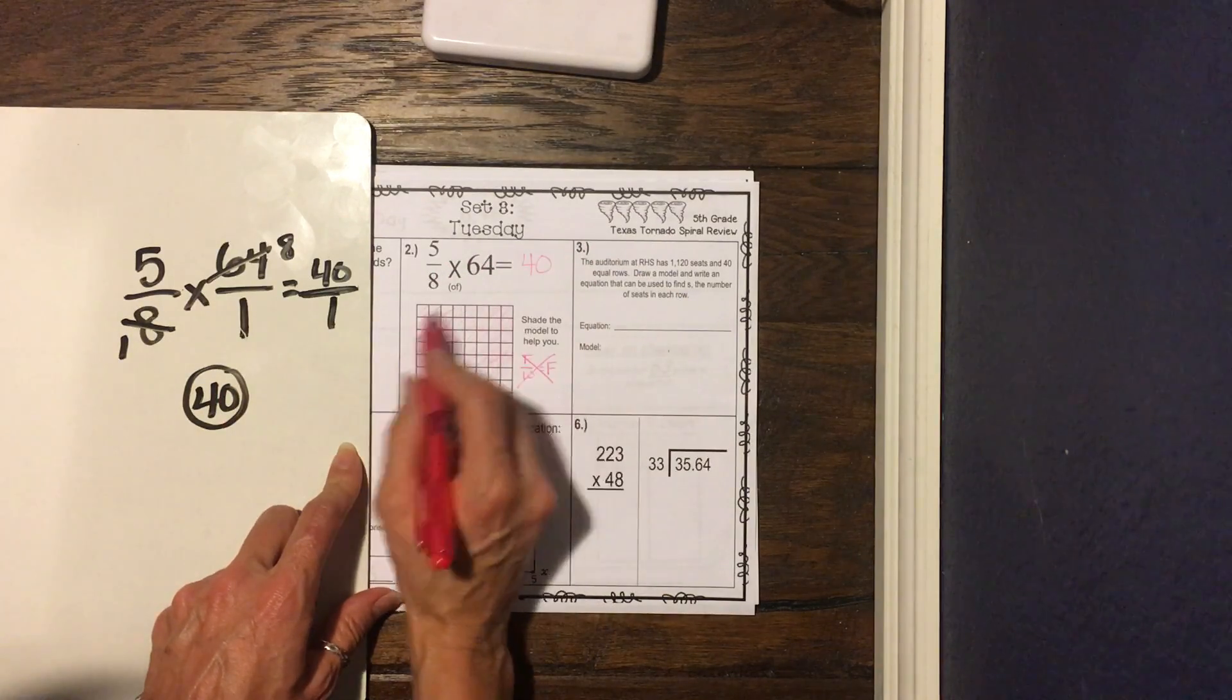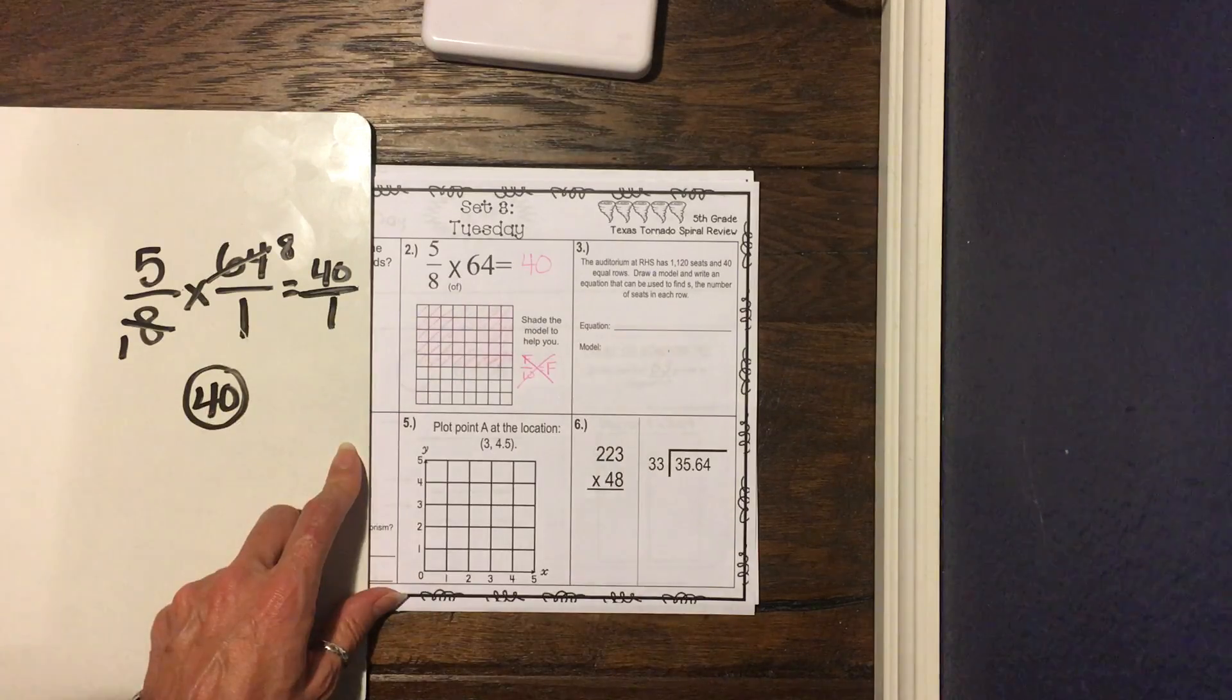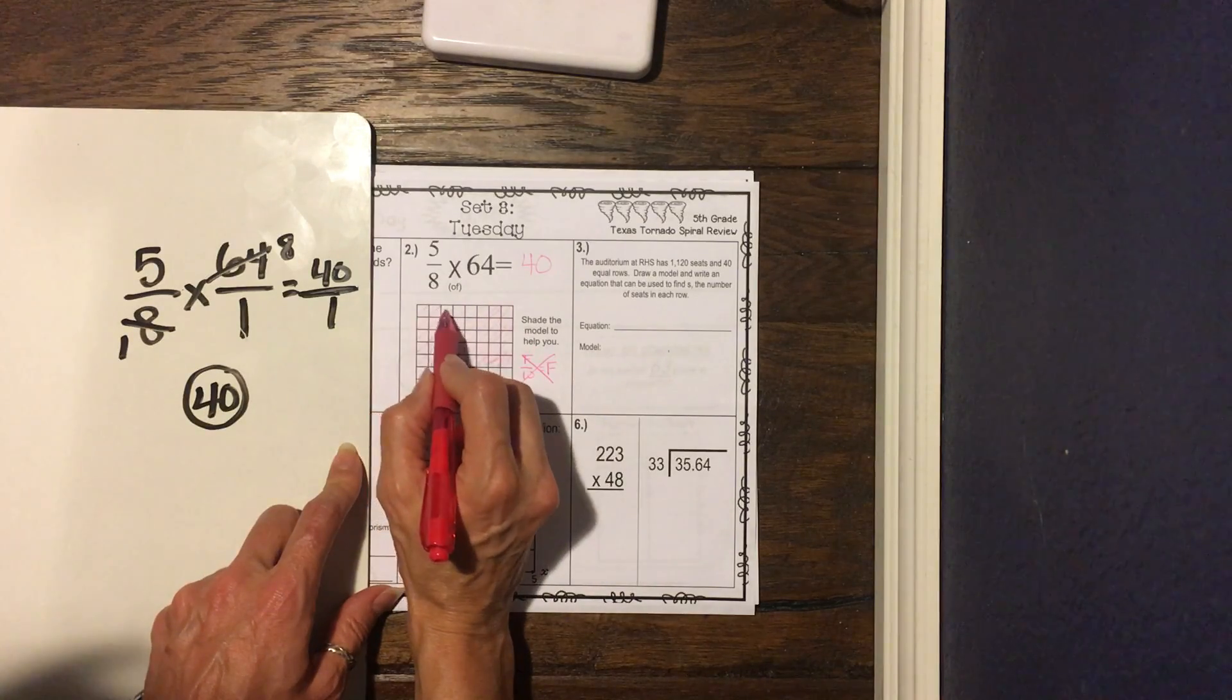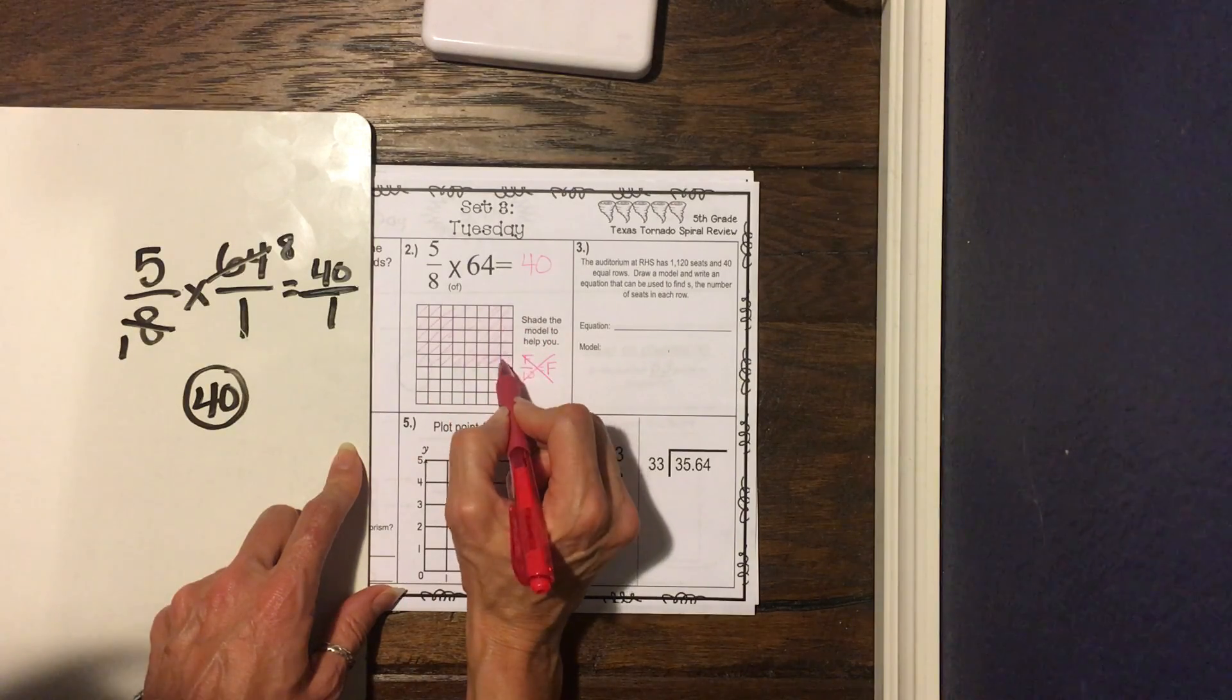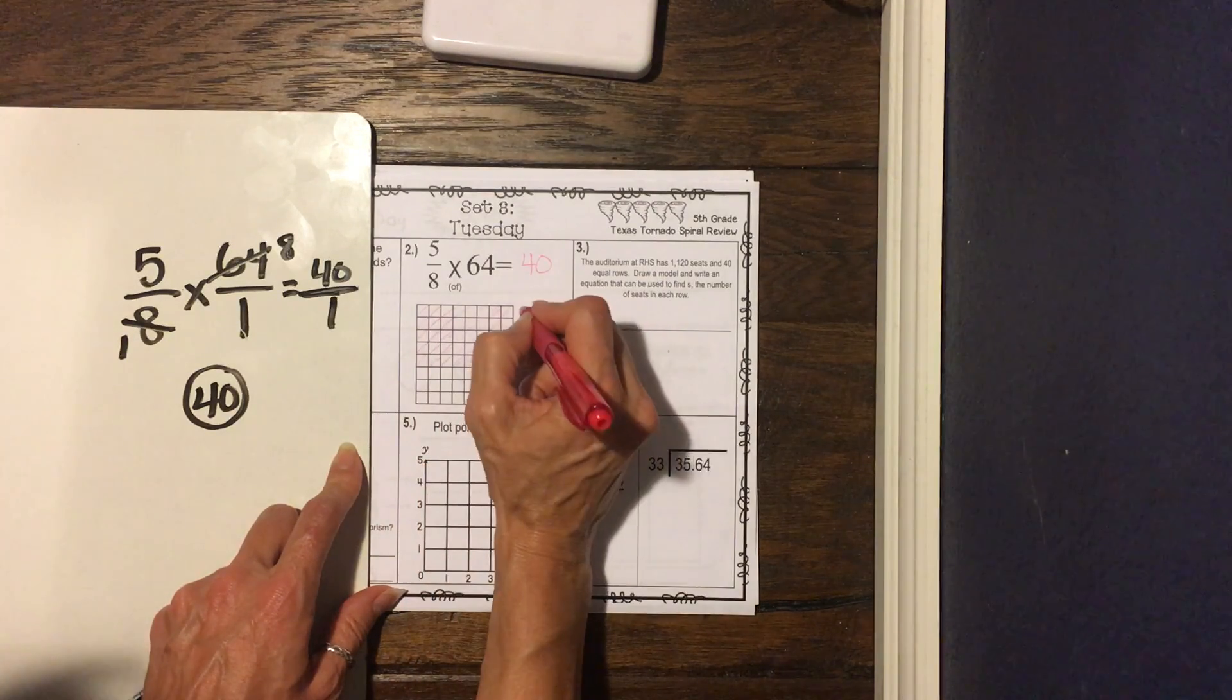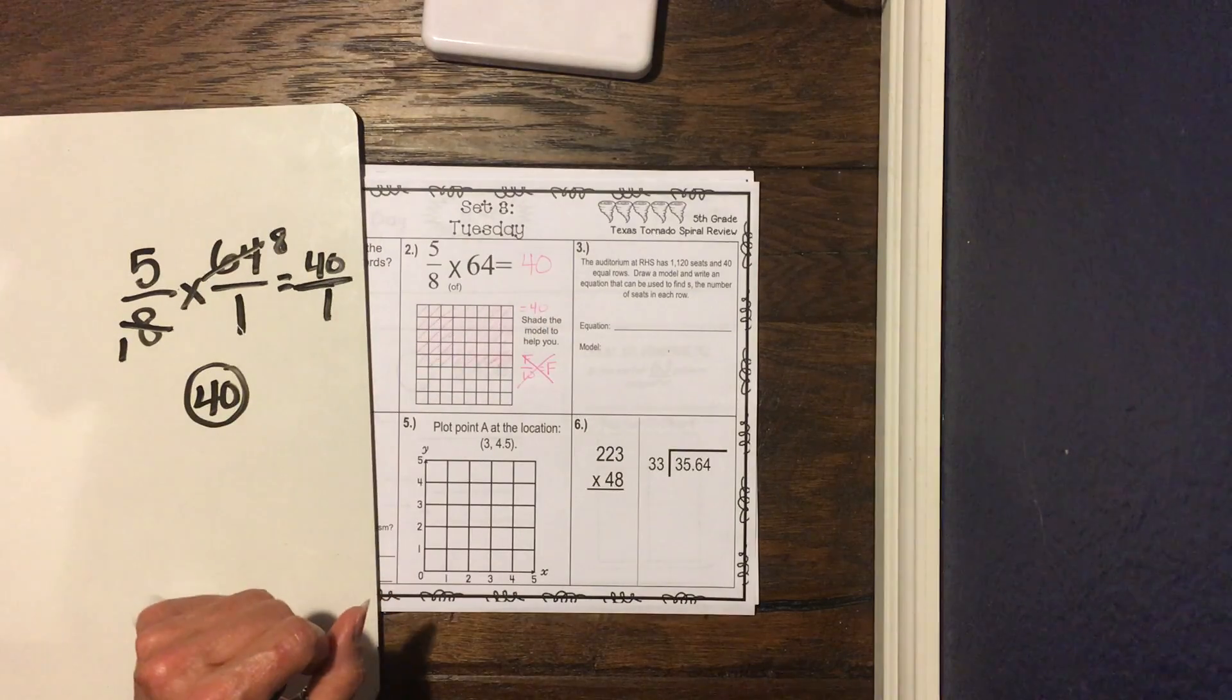So if that's correct, we should be able to count these, and we should have shaded 40. So let's count them. One, two, three, four, five, six, seven, eight, times one, two, three, four, five, and eight times five is 40. So we did that correctly.